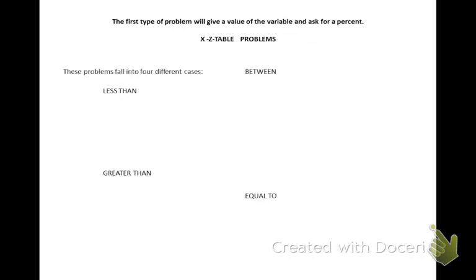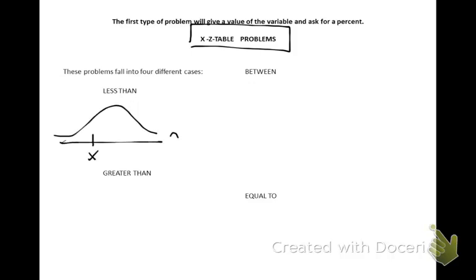We're going to start calculating probabilities. The first type of problem will give you a value of the variable x and ask for a percent as an answer. The steps are your x, z, table steps. You'll have four different cases. The first case is a less than case: you have an observation on the x-curve and find the probability of being less than it. We'll use the standard normal table, which always writes things in terms of being less than. Since this is already set up as a less than, we're good to go.